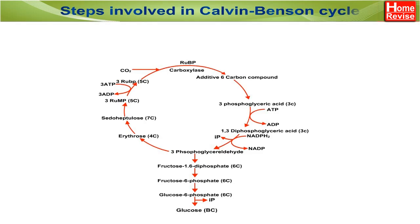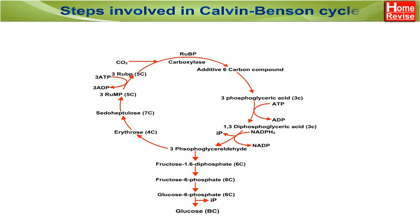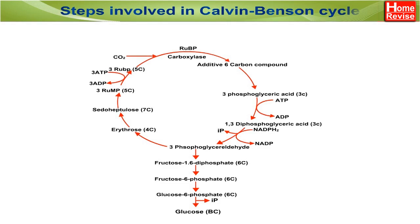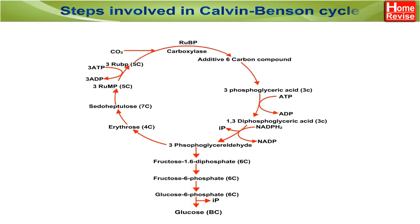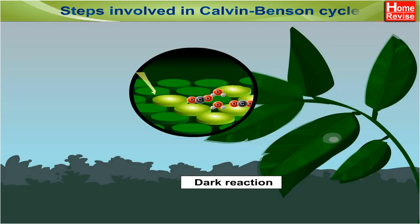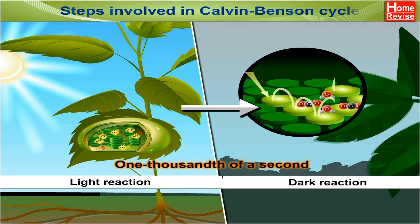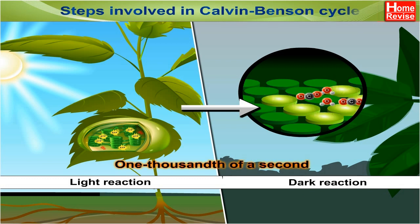Ribulose bisphosphate is regenerated to start the Calvin-Benson Cycle again and again. The dark reaction occurs simultaneously with the light reaction. The time gap between the two reactions is less than even one thousandth of a second.